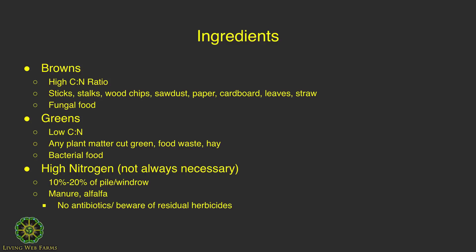If you're doing thermal compost, you may or may not need a high-nitrogen source, which would be manures or alfalfa. If you're using a high-nitrogen source in your pile, you only want 10 to 20 percent of your total ingredients to be high nitrogen — otherwise your temperatures are going to go way out of control and get really hot. High nitrogen is what gets the party started with the biology.